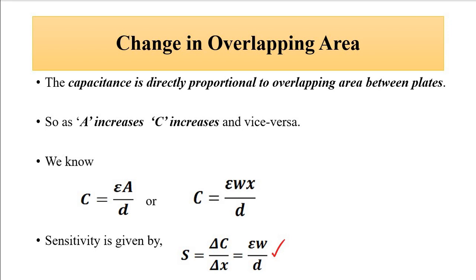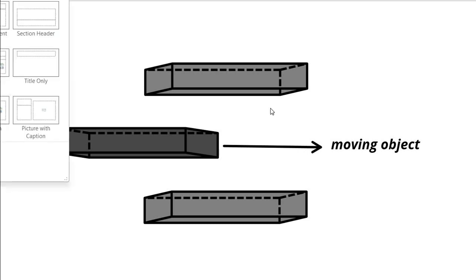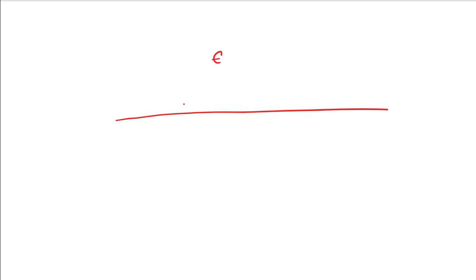In some cases, permittivity is also used for sensing. Consider two mediums of different permittivities — let's say one is air and the other is some medium with a different permittivity. This is the permittivity of medium 1 (air), and this is the permittivity of medium 2. Here, both plates of the parallel plate capacitor sensor are fixed, and the sensor as a whole is connected to the object whose movement is to be measured.